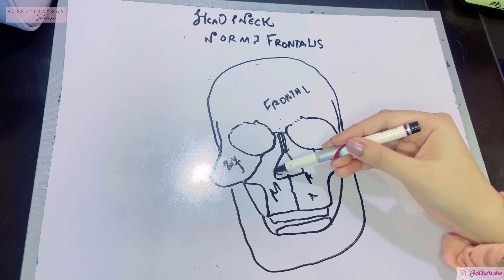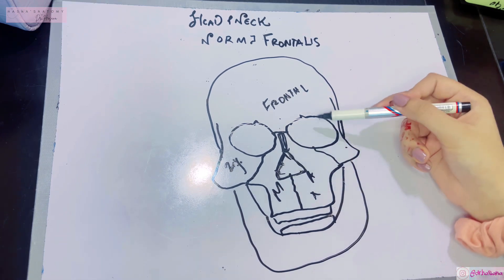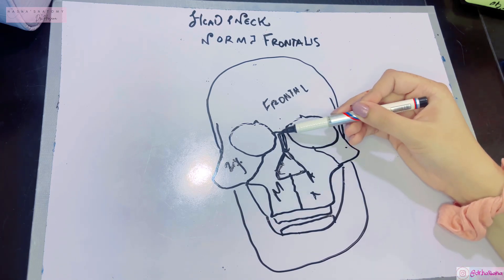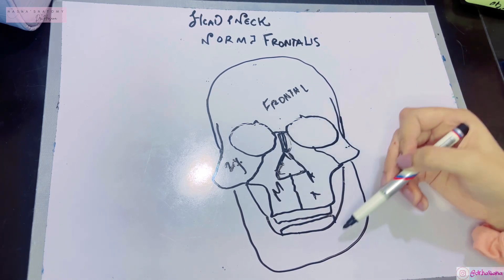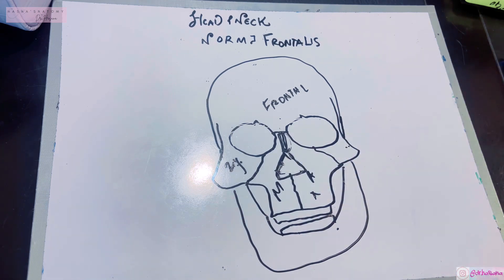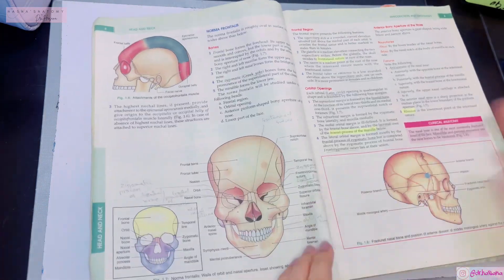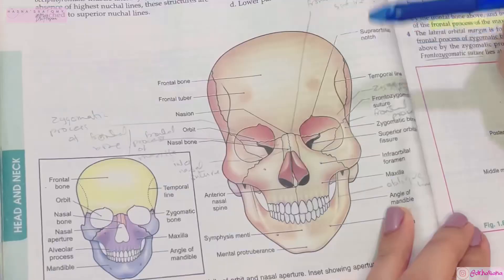So we have the zygomatic or cheekbone, the maxillary bone which is the upper jaw, and the piriform-shaped aperture for the nose. Just like eyeball sockets, this is also an aperture. Just above it are the two nasal bones, and then we have the mandible. That's a brief overview of the norma frontalis — now let's go to the book for a better understanding.